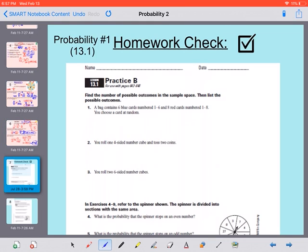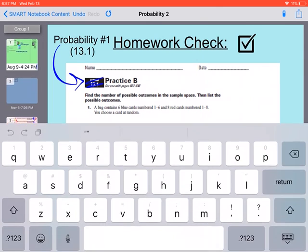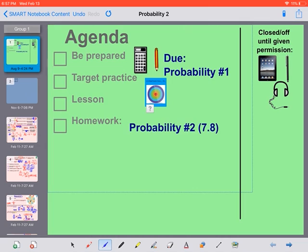So your homework is very similar to this. It does say 13.1, but this is the wrong one. Today, your homework is worksheet 7.8, which you should have on paper or on your iPad. Yesterday's was 13.1.